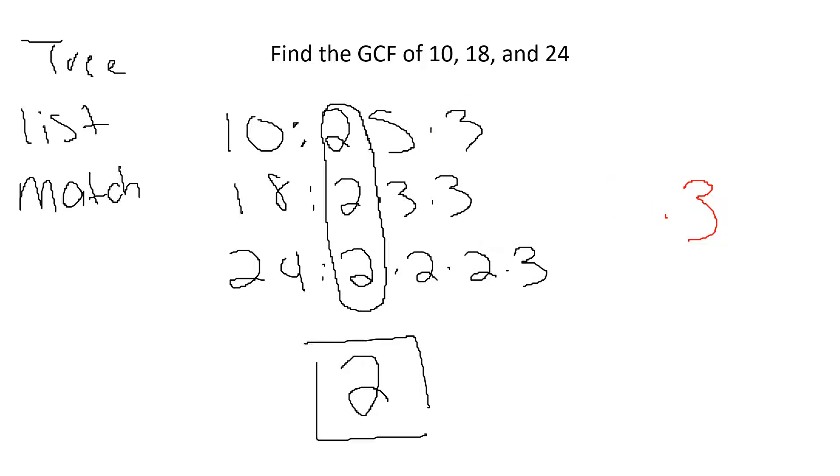So, tree it, list it, match it, and then if necessary, multiply it. Now, least common multiple is the one that's a little bit different, and it's easy to get these confused. Remember, first of all, that the names are backwards. So greatest common factor typically has a smaller number. Least common multiple will have a bigger number than you started.